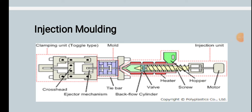The injection molding machine is shown in a figure. It includes a crosshead, clamping unit of toggle type, mold, tie bar, injector mechanism, flow cylinder, valves, heater, hopper, screw motor, and injection unit.